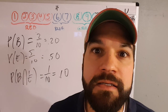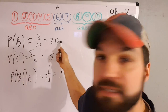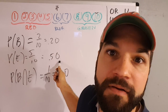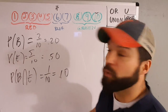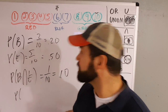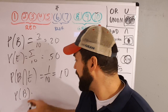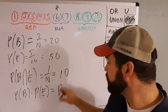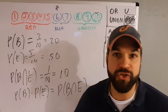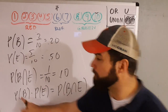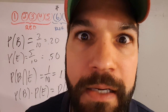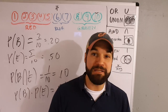Does anybody notice anything interesting? What's 0.2 times 0.5? It's 0.10. The probability of blue times the probability of even equals the probability of blue and even in this case. You can just multiply for 'and' — but this only happens when they're independent.